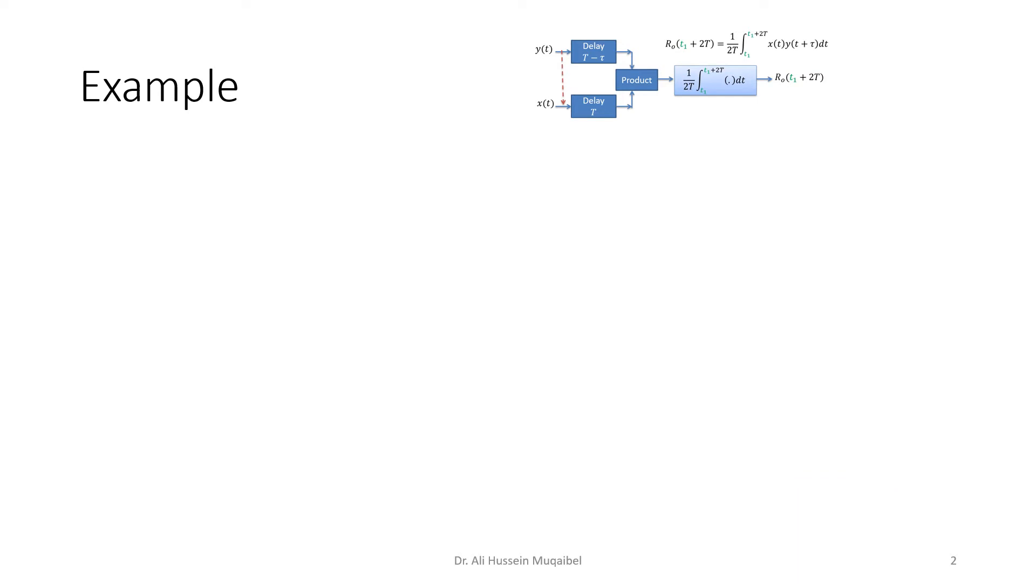Now, let's do an example. I have reproduced the figure on the side to show you that we are going to use the same figure to do an example for measuring the correlation. In this example, it says use the above system to measure the auto-correlation of X(t), given as A*cos(ω₀t + θ), where A and ω₀ are just constants, and θ is a random variable.